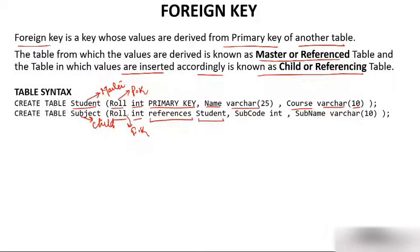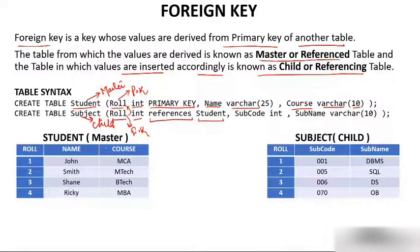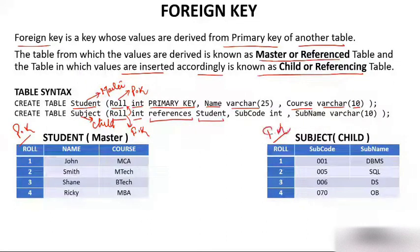So you are referencing the role column in the child table with the student role in the master table. To create a foreign key you must have at least one common column in the two tables. Here, role acts as a primary key in the master table but acts as a foreign key in the child table. After understanding these two tables, we will study the foreign key constraint, that is, the referential integrity constraint.